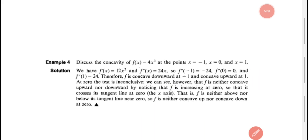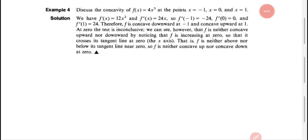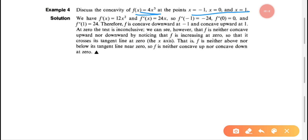Next question: discuss the concavity of f(x) = 4x³ at the points x = -1, x = 0, and x = 1. Concavity is determined by the second derivative. We compute: f'(x) = 12x², and f''(x) = 24x. We will evaluate f''(-1), f''(0), and f''(1) at these three points.